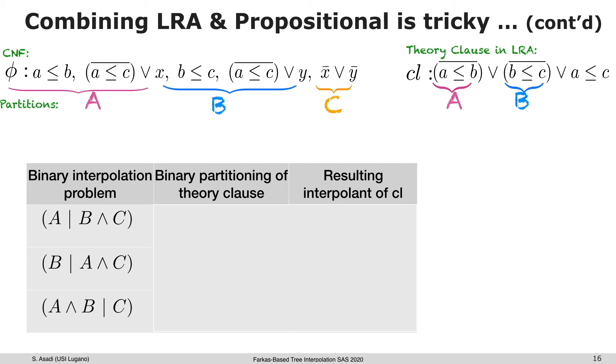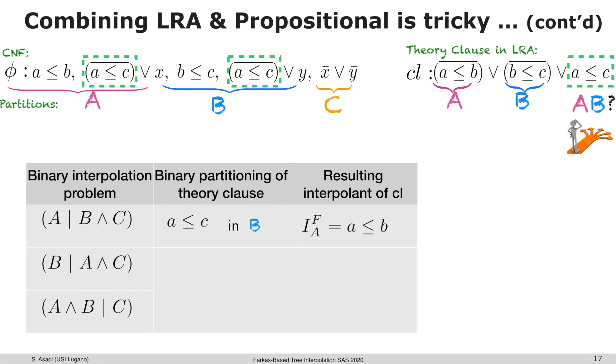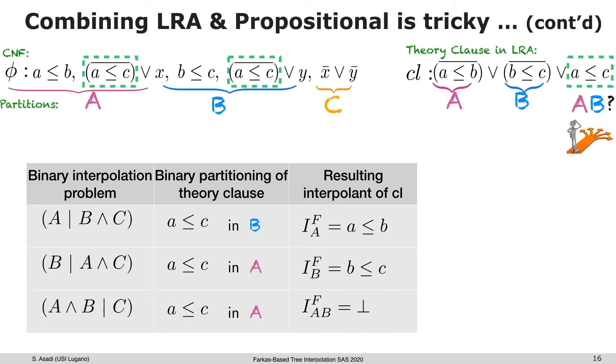For example, if we label A less than or equal to C as B for the first interpolation problem, the resulting Farkas interpolant would be A less than or equal to B. Now if we change the label and put it in A, the resulting interpolant for the theory clause will be B less than or equal to C and false.